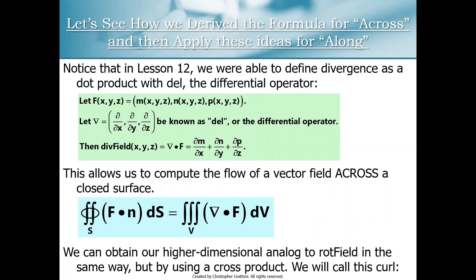A dot product takes two vectors and produces a single scalar, so divergence is a nice, simple scalar quantity. On the other hand, when we try to generalize rotation to three-dimensional space, instead of taking a dot product between del and our vector field, we're going to take the cross product. The cross product of two vectors is itself a third vector, which means that curl is going to be more complicated than divergence.